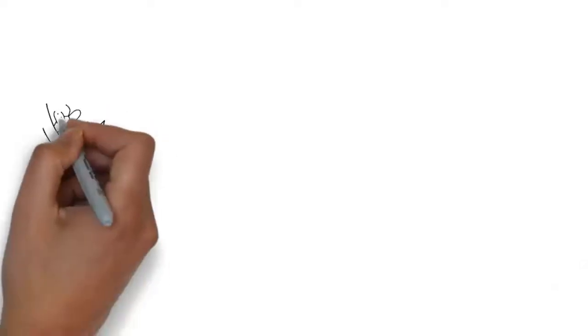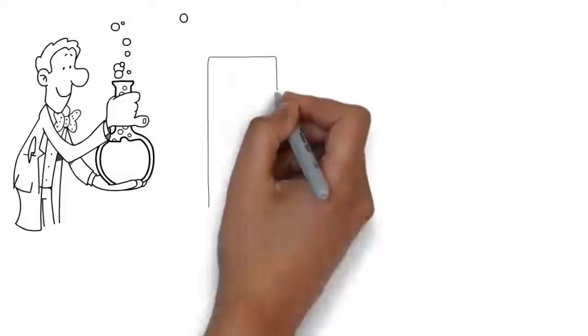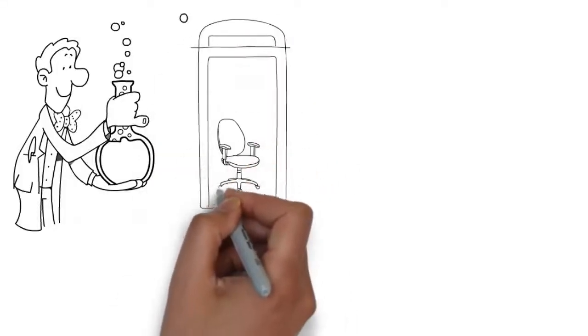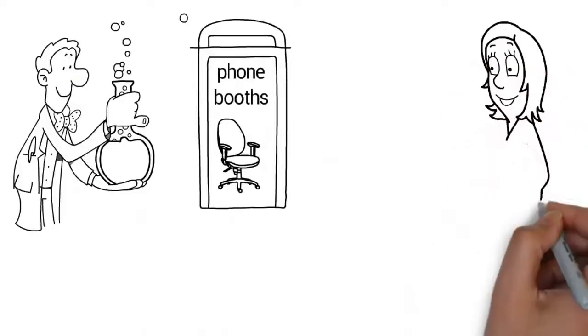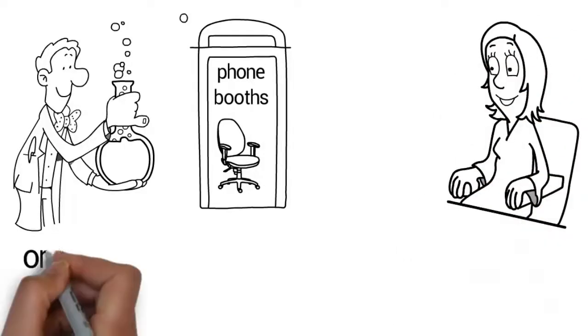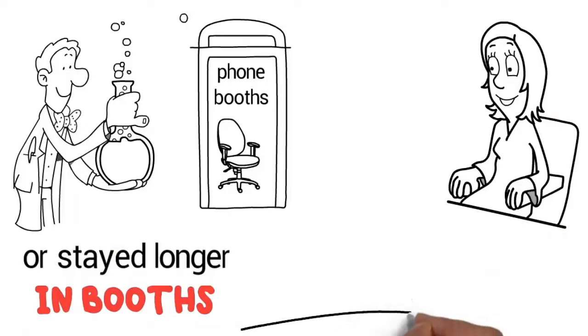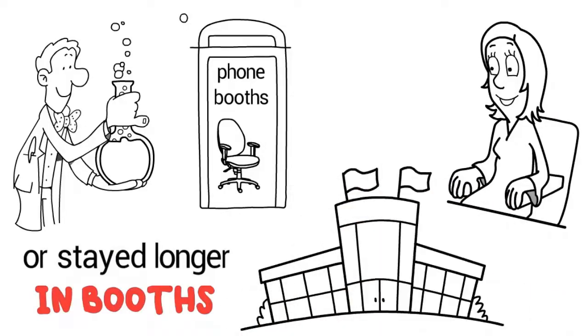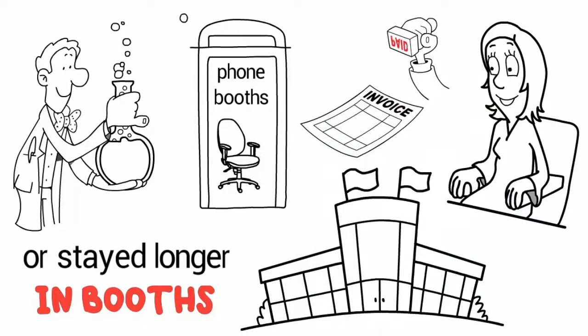And there's more! When scientists took a male hormone and sprayed it on chairs and inside phone booths, they found that women continued sitting on the chairs or stayed longer in booths. One commercial company researching scents found that perfumed invoices were paid faster.